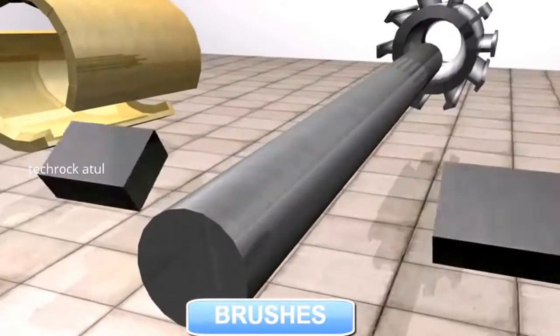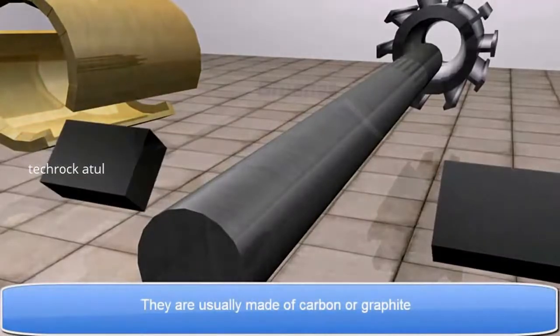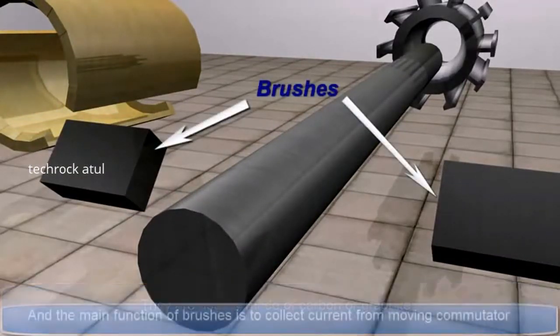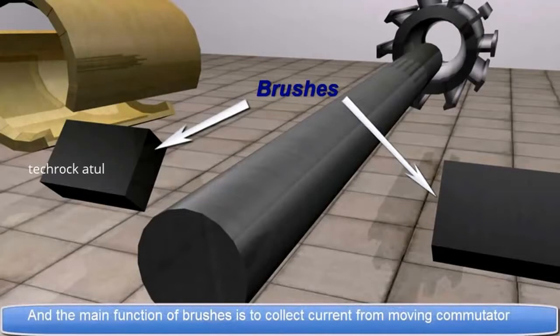Brushes. They are usually made of carbon or graphite. And the main function of brushes is to collect current from moving commutator.